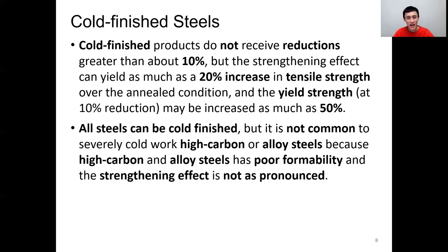Cold finishing means we work the material at room temperature. Cold finished products don't receive reductions greater than 10%. Typically, for cold finished material, the strength can be improved significantly by cross-sectional area reduction. When we do cold rolling, the cross-sectional area reduction is usually less than 10% overall. However, the tensile strength can be improved by as much as 20% and the yield strength may be increased by as much as 50%.